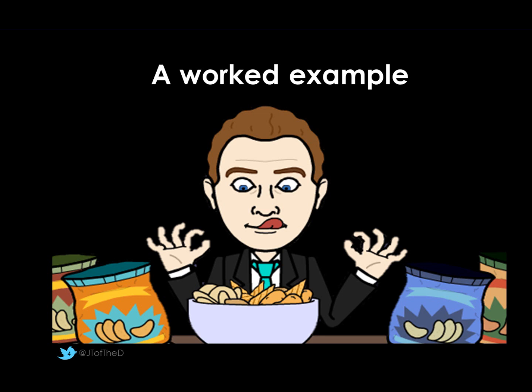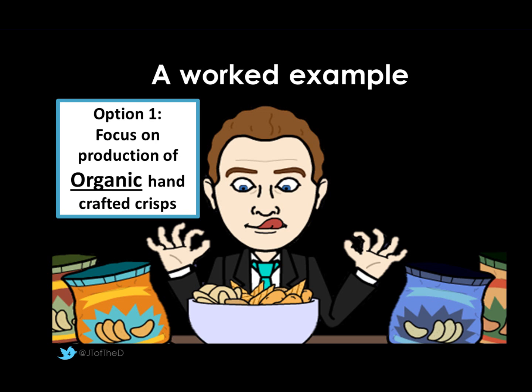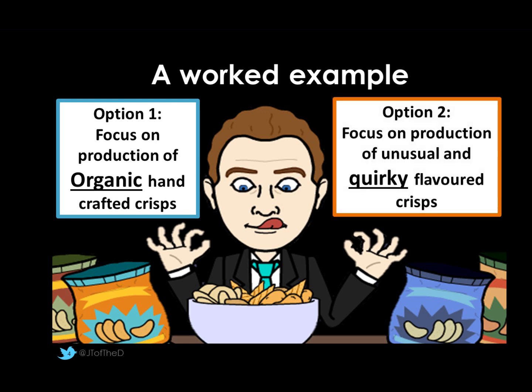Let's have a look at a decision tree in context. We have a business which produces and sells crisps. They want to increase their profits and have two options, but they can only afford one investment. The first option is to focus production on organic hand-crafted crisps — perhaps gaining extra revenue and lower costs. Option two is to maintain current production methods but develop quirky flavour crisps to add a USP that way. We're going to build a decision tree to see which of these two options would be better.